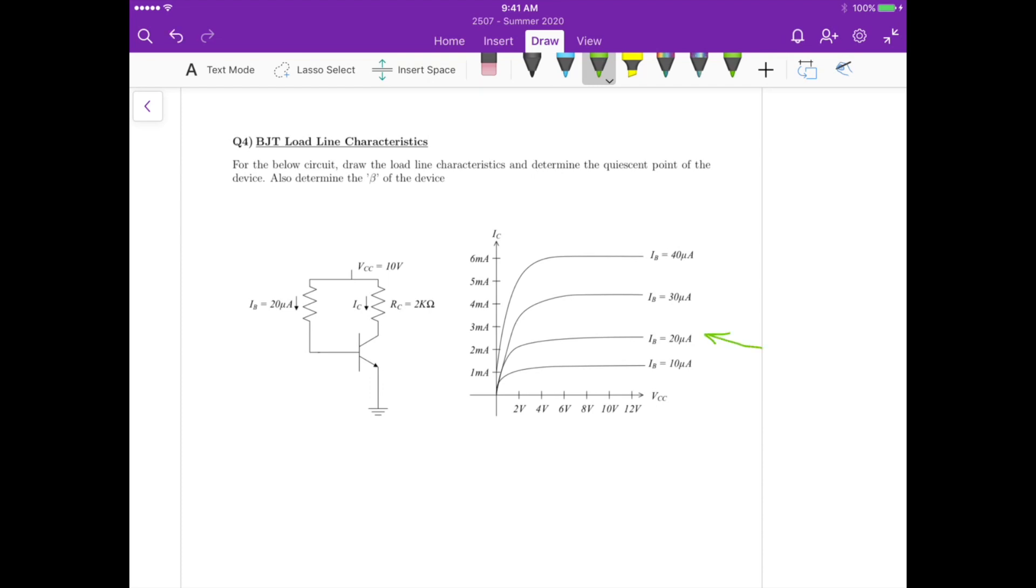Now how do we determine the load line? How do we calculate the load line? To specify the load line, we need to find first the maximum value of the collector current, IC max, and the maximum voltage between collector and emitter, VCE max.